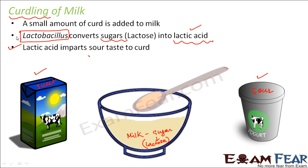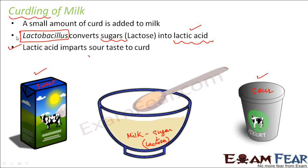Lactobacillus is a bacteria, and as you can see, this bacteria is not our enemy — instead it is our friend. It helps in preparing a better nutritional product like curd, and even when it gets inside our body it helps in the breakdown of food, absorption of nutrients, and treats diarrhea. The increased acidity causes the milk proteins to turn into solid masses — that is why milk is liquid but curd is like solid masses. This conversion happens due to the coagulation of milk proteins.